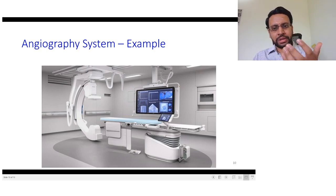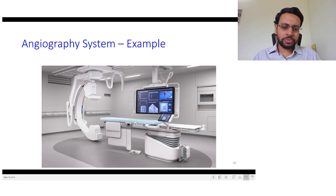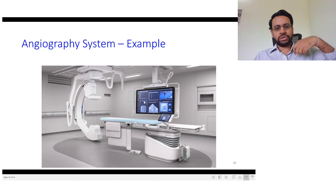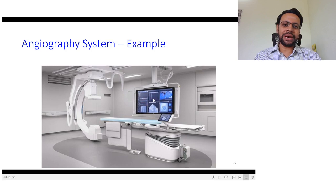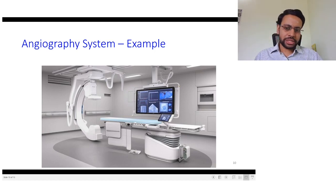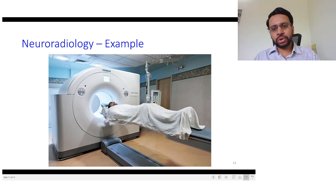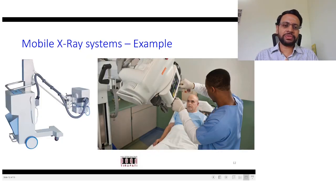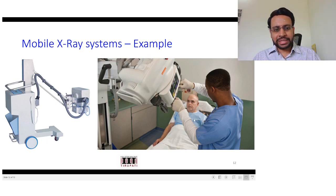An angiography system setup has the patient lying on a movable table with real-time monitoring. The angiography system is used to examine the health condition of blood vessels, and the setup allows clinicians to identify and clear blockages in real time. Different manufacturers produce different equipment shapes for the same application. There is also neuroradiology equipment, which looks similar to a CT scanner and is used for 3D brain imaging.